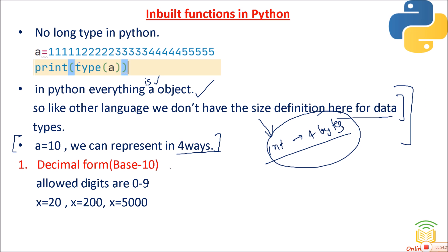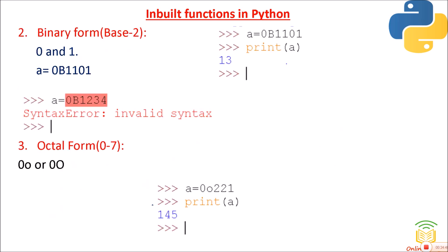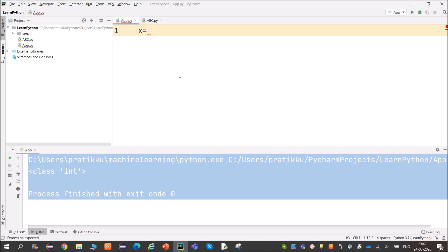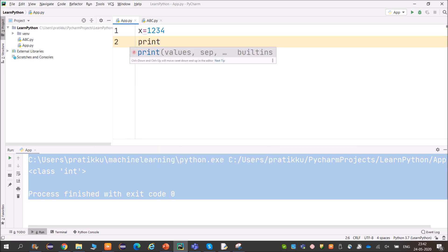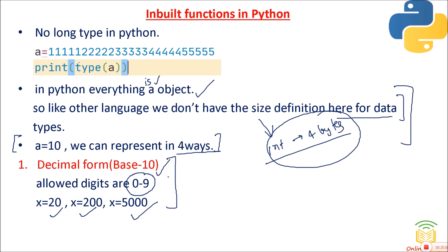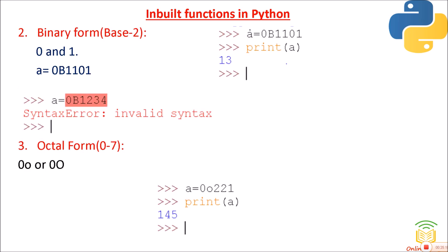A value like a = 10 can be represented in four ways: decimal, binary, octal, and hexadecimal. Decimal form has base 10 with allowed digits 0–9. So values like 20, 200, 5000, or 1234 are all decimal values. This is what we've been assigning all along — all decimal.